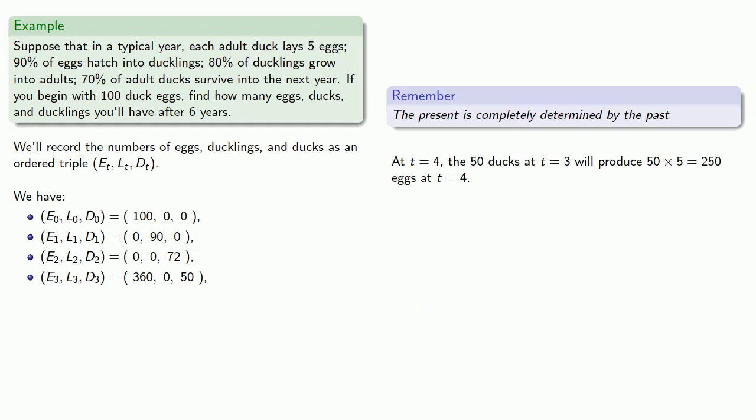At t equals four, the 50 ducks we had earlier will produce 50 times five, 250 eggs. And the 360 eggs we had before will hatch into 324 ducklings at t equals four.